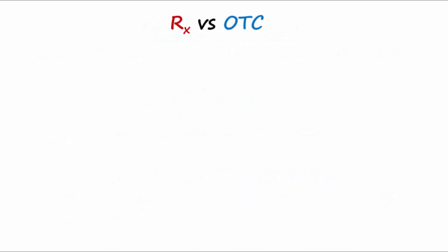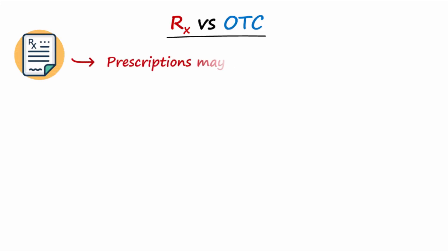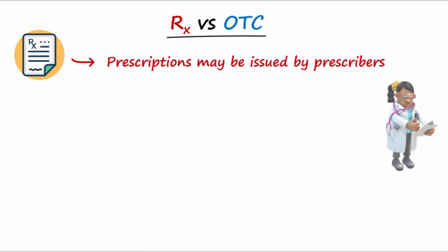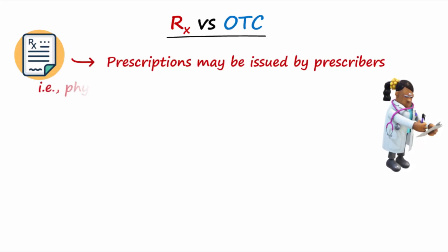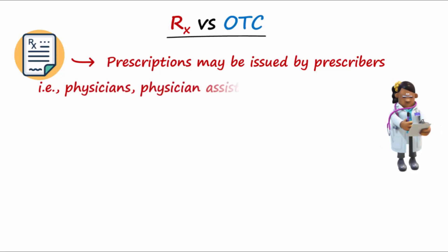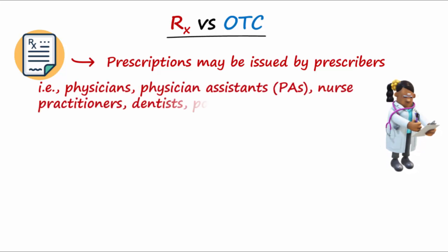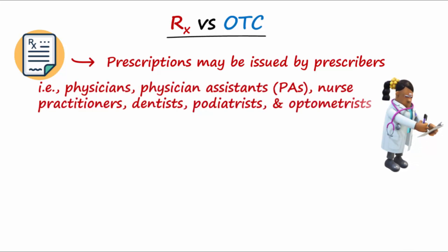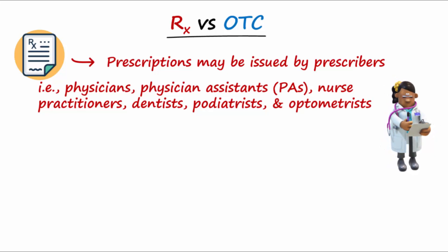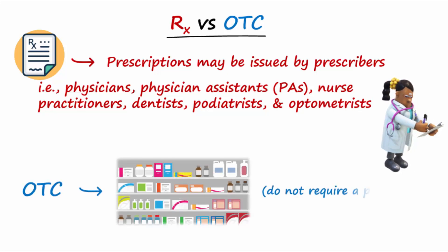Drugs may be classified as prescription or over-the-counter, based on whether or not they require a prescription to be dispensed. Prescriptions may be issued by prescribers such as physicians, physician assistants, nurse practitioners, dentists, podiatrists, and optometrists. Over-the-counter, or OTC, medications may be purchased without a prescription.